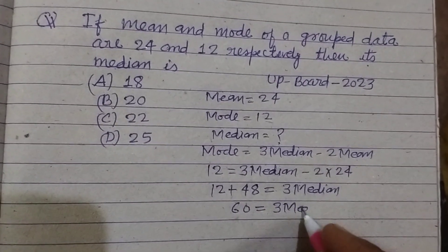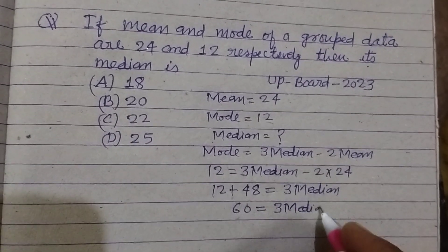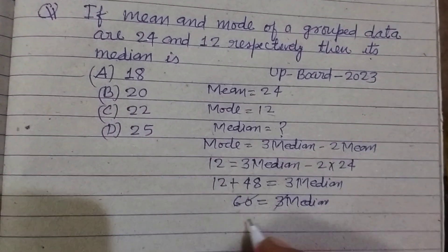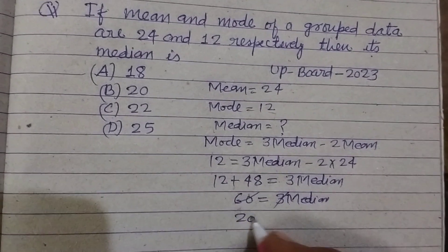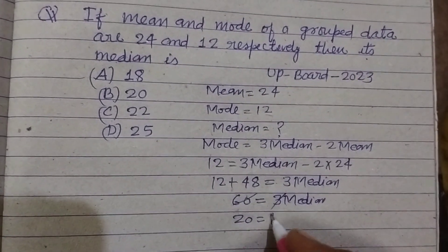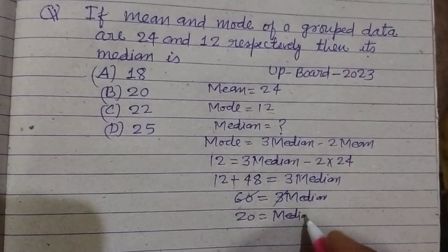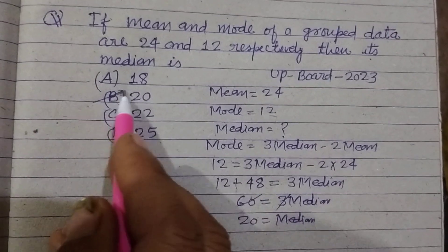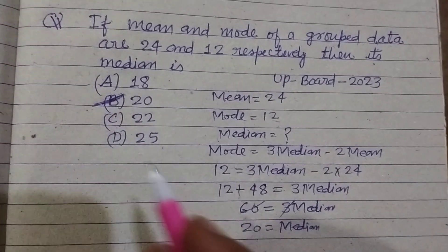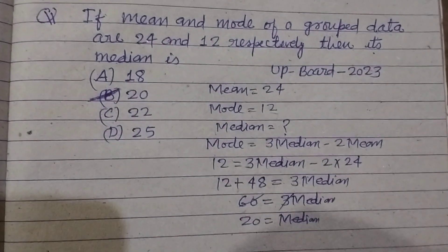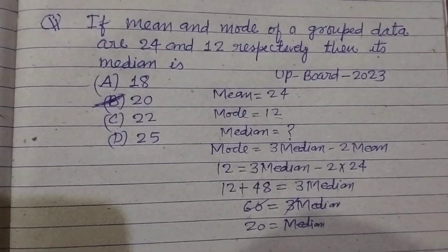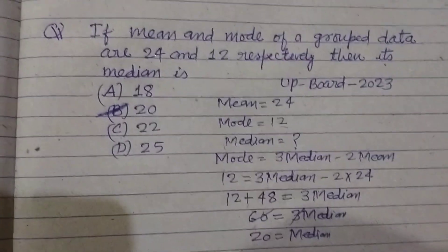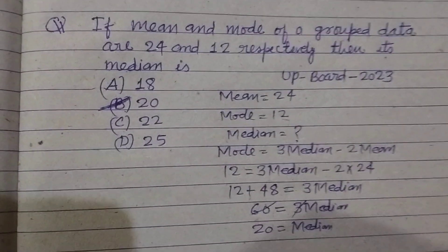When we divide 60 by 3, we get 20. So the median is 20, which is found in option B of this question. I hope you got it — please like the video, subscribe to the channel, thanks for watching.